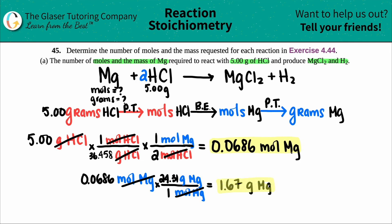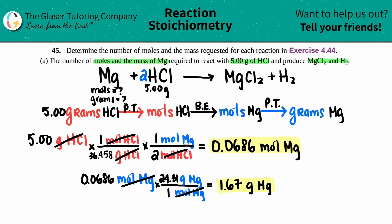Those are the two answers: 0.0686 moles of magnesium and 1.67 grams of magnesium. Basically, to react with 5 grams of HCl you need 1.67 grams of magnesium. If you want to use up all 5 grams of HCl in the reaction, you need 1.67 grams of magnesium. Thanks so much for watching — give this video a thumbs up, subscribe, and I'll see you in the next question!